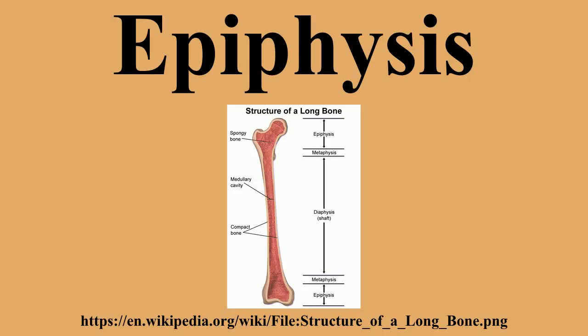Traction epiphyses ossify later than pressure epiphyses. Examples of traction epiphyses are the tubercles of the humerus and trochanters of the femur. Atavistic epiphyses are types of fused bones, for example the coracoid process of the scapula, which has been fused in humans but is separate in four-legged animals. Aberrant epiphyses are deviations from the norm and are not always present, for example the epiphyses at the head of the first metacarpal bone.